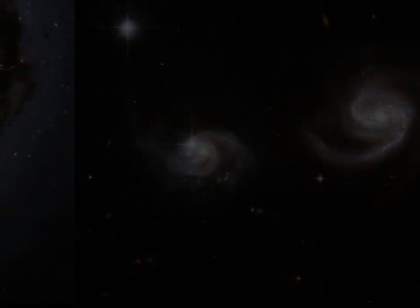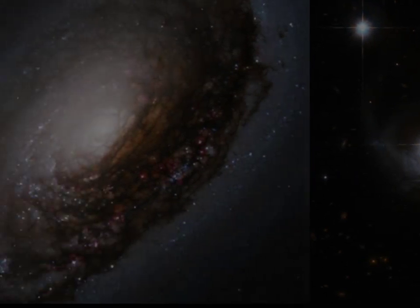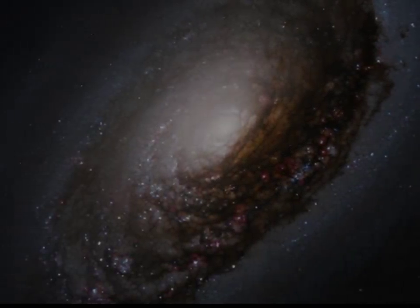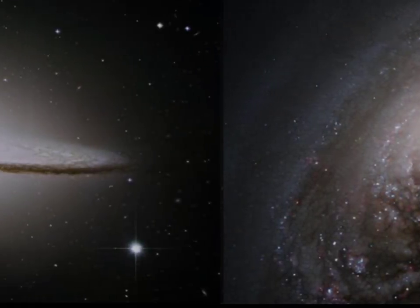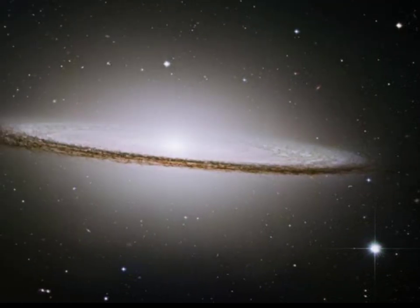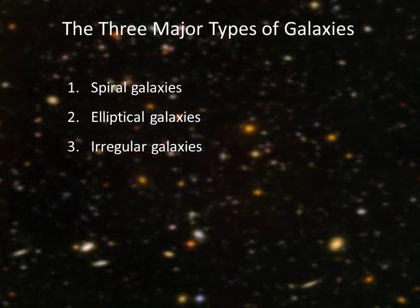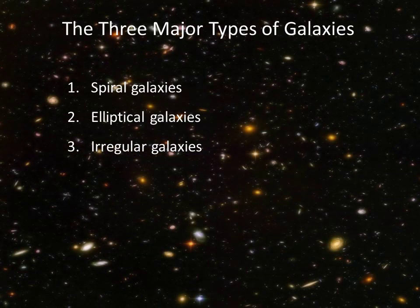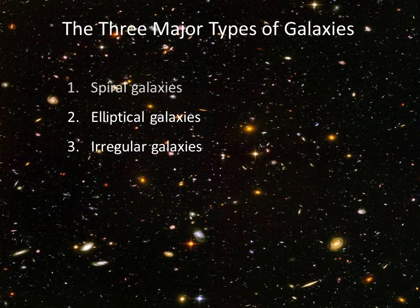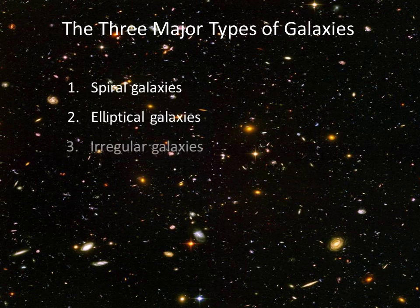Galaxies are so beautiful. If you have the time, look at the Hubble website gallery — you can enjoy the wide variety of gorgeousness our universe has to offer. If you look at galaxies long enough, you're likely to agree with astronomers that galaxies fall into three major types. The three major types of galaxies that we see are spiral, elliptical, and irregular.